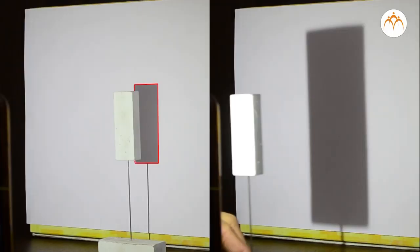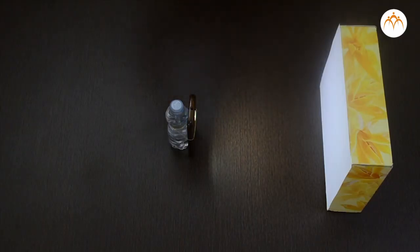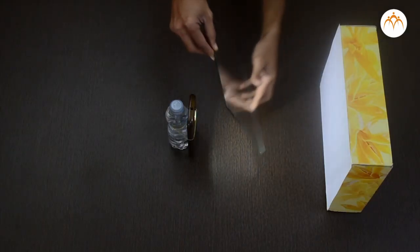If I move the eraser towards the torch, the size of the shadow becomes large but it also becomes hazy or blurred. Can you think why shadow is sharp when eraser is closer to the box and it is blurred or hazy when it is nearer to the torch?